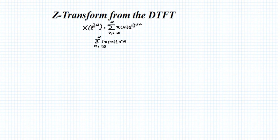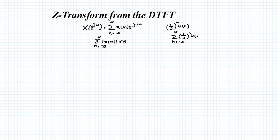If the condition is not satisfied, the DTFT does not exist. For example, if there is a signal (1/2)^n times u(n), and you evaluate sigma n equals minus infinity to infinity of (1/2)^n times u(n), this is absolutely summable and you will get the final answer as 1 divided by (1 minus 1/2).